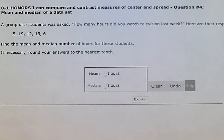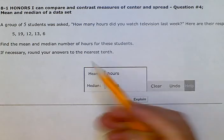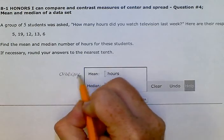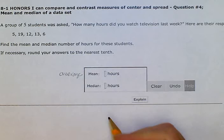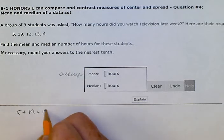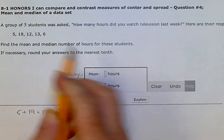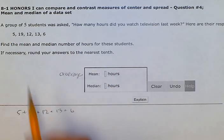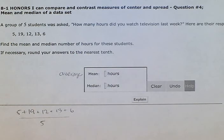So remember that mean means average. So we're going to add all the numbers together, and then divide by the number of students. So we're going to divide that by five. So we're going to put that in our calculator.